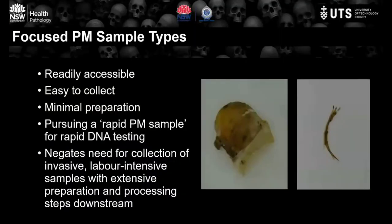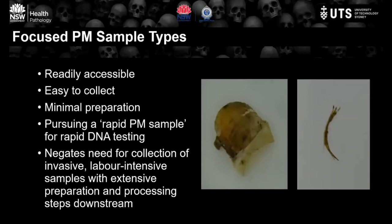In conjunction with rapid DNA testing, we also tried to target rapid samples — samples that are readily accessible and present in highly decomposed remains and easy to collect. We sought sample types that would not only be easy to collect but would allow minimal sample preparation. These factors led us to samples like nail, tissue biopsy, hair, and small bones, negating the need for more invasive, labour-intensive collection such as femur, followed by extensive preparation steps.